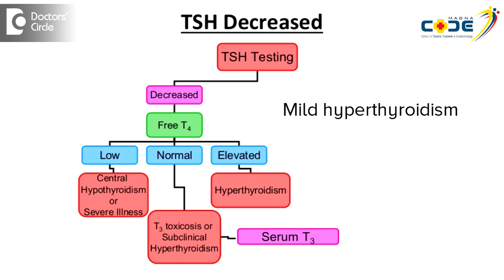This can happen when there is a mild hyperfunction in the thyroid gland. If there is a slight excess of thyroid hormone being produced, the TSH can become suppressed to a very low level. This is also because of a log-linear relationship between the thyroid hormone and the TSH value.